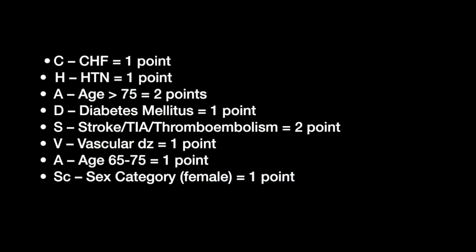The next thing I want to talk about is the CHADS-VASc score — an acronym you can use to risk stratify any of your patients with new-onset atrial fibrillation. Based on this score, you can tell if they might need aspirin or anticoagulation. A score of 0 means no anticoagulation is needed. A score of 1 means you can use antiplatelet or anticoagulation therapy. A score of 2 or greater highly recommends anticoagulation therapy.